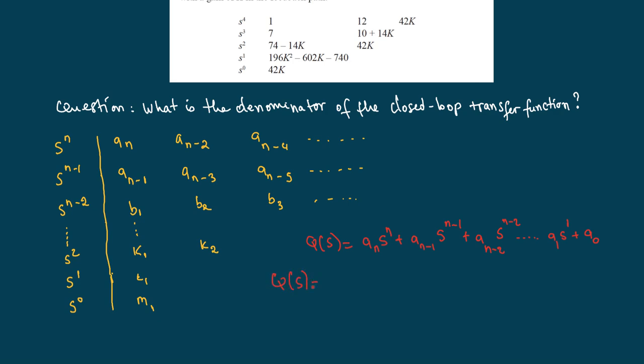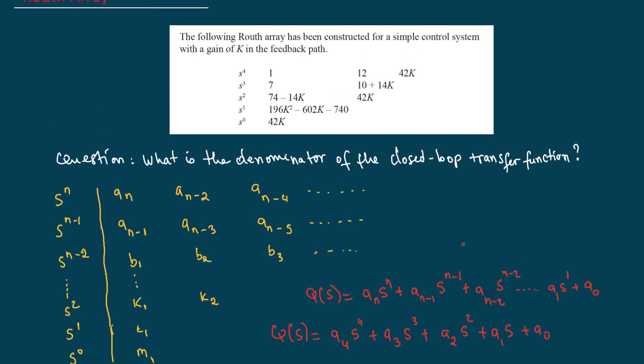For our example here, I have a_4 S^4 plus a_3 S^3 to the power three plus a_2 S to the power two plus a_1 S to the power one, of course, plus a_0, right? So going back to our example. So all we're going to do here right now is just identify using the matrix over here, the array here, using the table that we are given here.